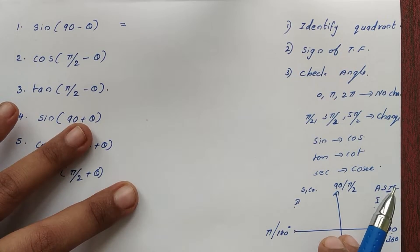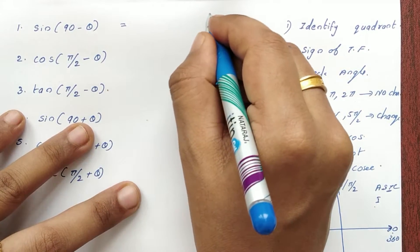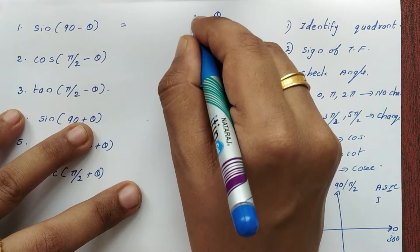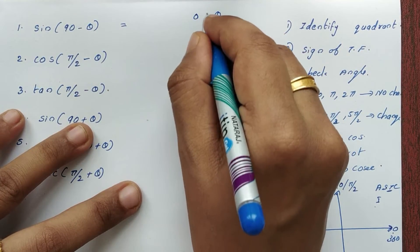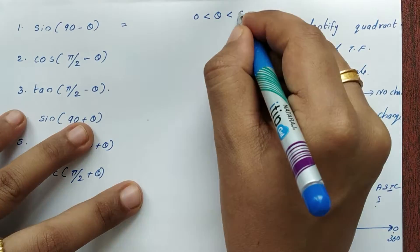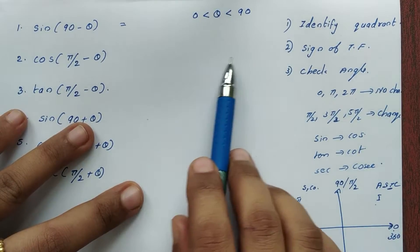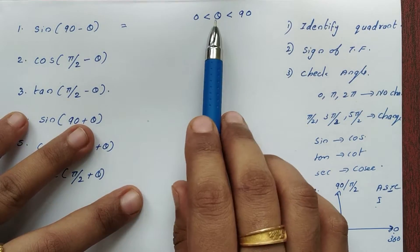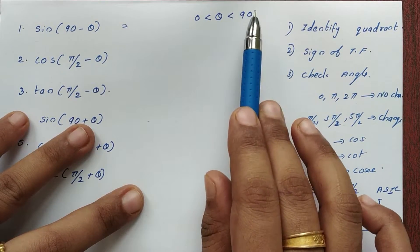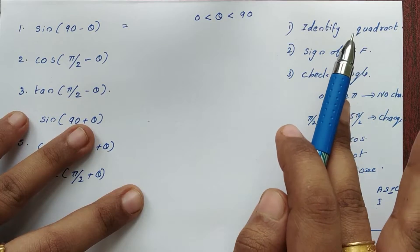So we have 90 plus theta and 90 minus theta. The theta value is between 0 and 90 degrees.